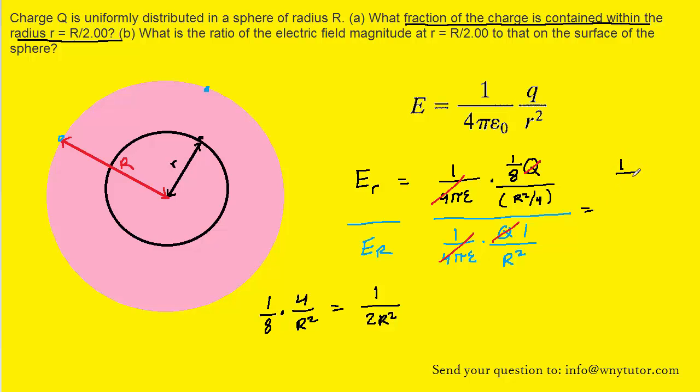So here we're going to have that black colored fraction. And then for the blue colored fraction, we just have 1 over R squared. Now if we do keep change flip again, we're going to have 1 over 2R squared multiplied by R squared over 1. And we can see the R squared will cancel out, and that's going to leave us with an answer of 1 over 2. And that will be the correct answer for part B.